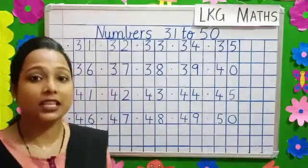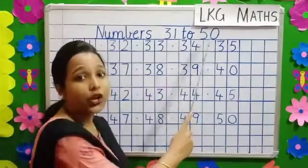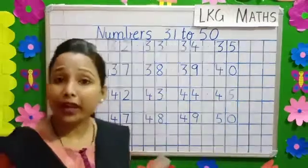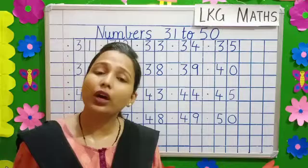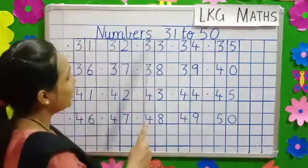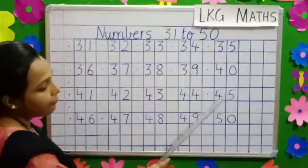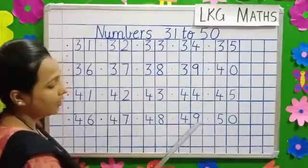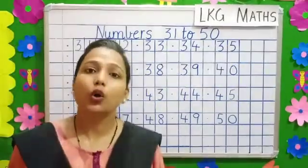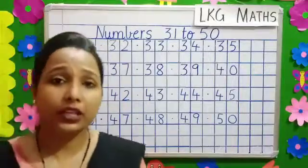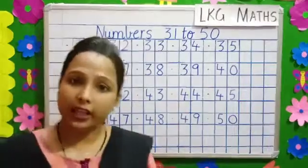So what have we learnt today children? We have learnt numbers from 31 to 50. When you write these numbers, be very careful about the formation of some numbers that you have learnt earlier. Like 3, 7, 6, 5, 9, 8 and all the numbers as a whole. Parents, please help your child to practice these numbers in their copy.